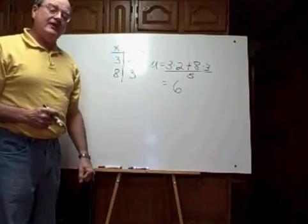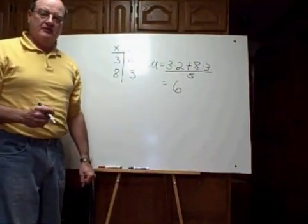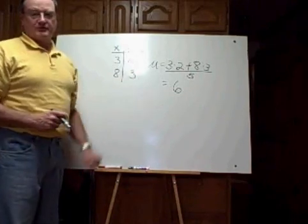So the mean isn't 5 and 1 half. It's actually 6, because there was one more 8 than there was a 3.